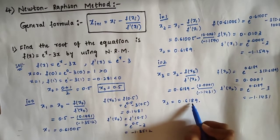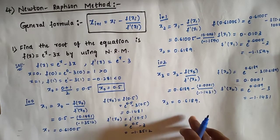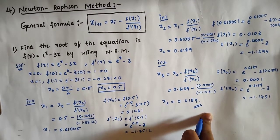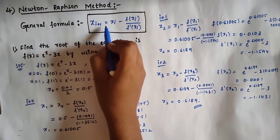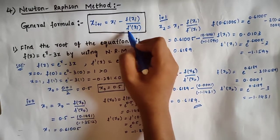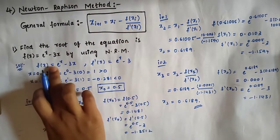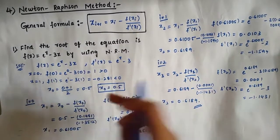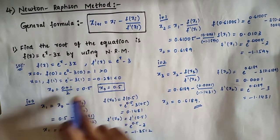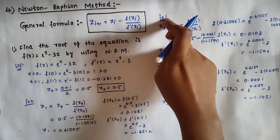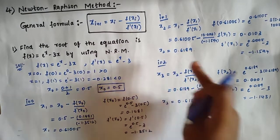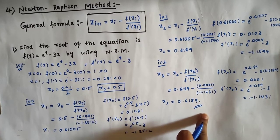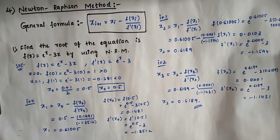x₂ = 0.6189 and x₃ = 0.6189 — they completely match, so we stop the iterations here. This is the Newton-Raphson method with the formula x_(i+1) = x_i minus f(x_i)/f'(x_i). We take f(x) and f'(x), check that one value is less than 0 and another greater than 0, take their average as x₀, and iterate until 4 decimal places match.